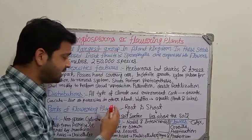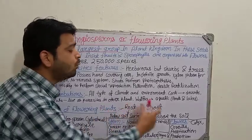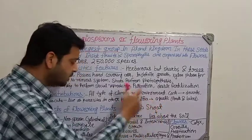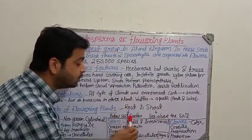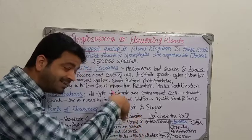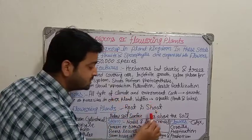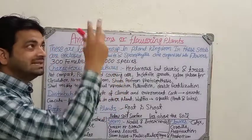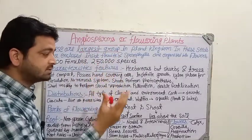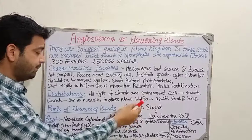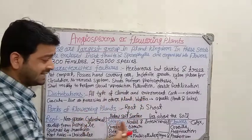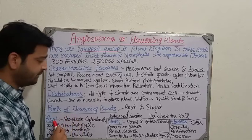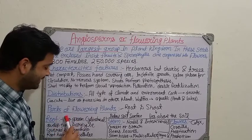Coming to the parts of flowering plants — basically, two categories: root and shoot. Root is below the soil surface, underground, whereas shoot lies above the soil. Flowers, leaves, stems, and branches all come under the shoots. We are going to discuss the root, stem, and flower in this video.